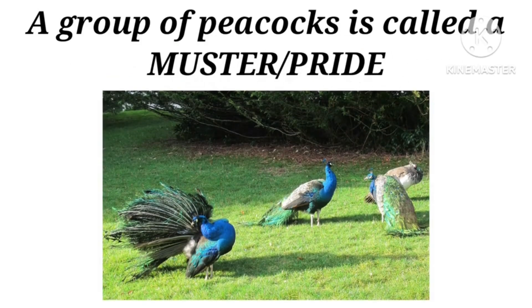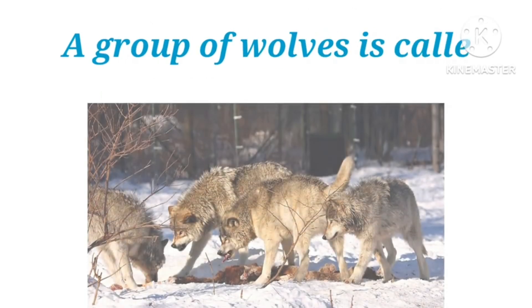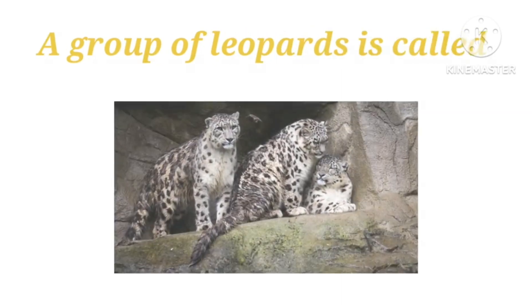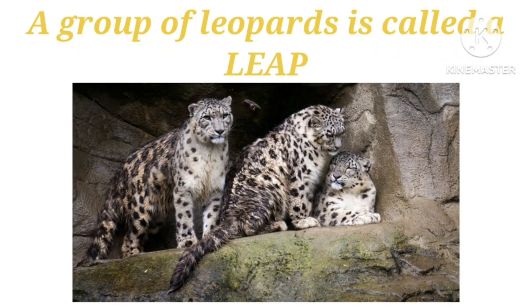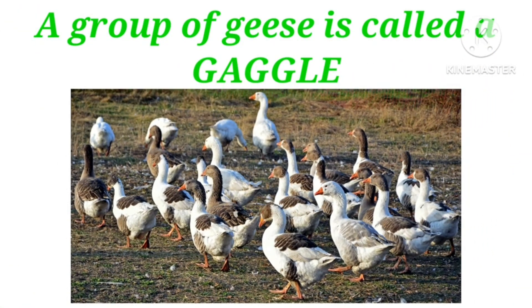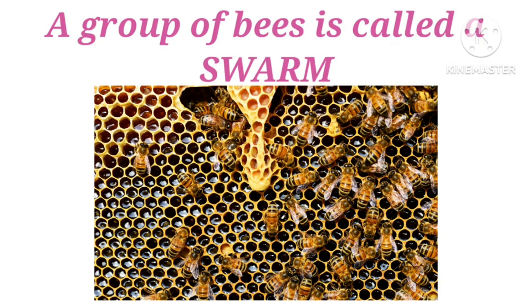A group of peacocks is called a muster or pride. A group of wolves is called a pack. A group of leopards is called a leap. A group of geese is called a gaggle. A group of bees is called a swarm.